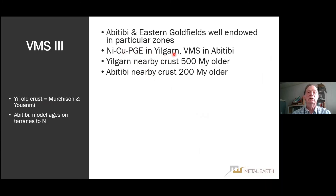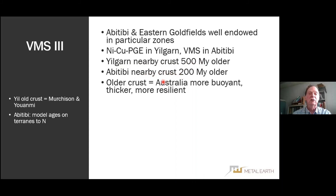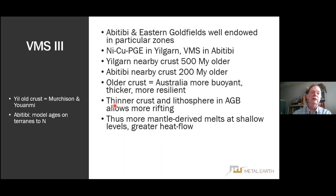In the Yilgarn we see komatiitic nickel; in the Abitibi we see VMS. In the Yilgarn, the nearby crust is 500 million years older; in the Abitibi it is about 200 million years older. The older crust in Australia is more buoyant, thicker, and more resilient. In the Abitibi by comparison the crust and lithosphere combined are thinner, and that allows for rifting. Thus, late in Abitibi history, we have mantle-derived melts at shallow levels and greater heat flow.